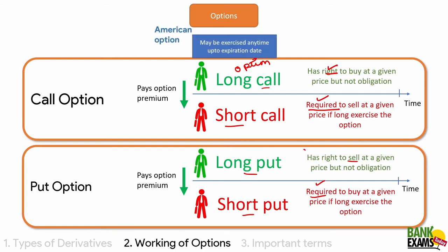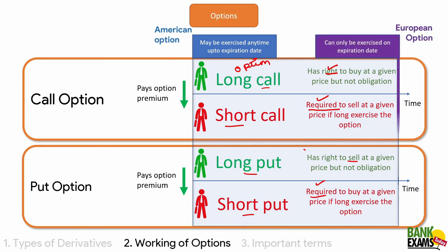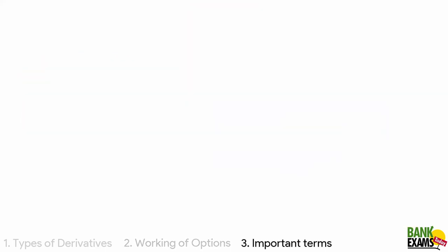What are American options and what are European options? Under American options, the option may be exercised at any point of time — the long can exercise his option at any point up till the expiration date. Under European options, the long can exercise his right only on the expiration date. An easy way to remember: 'A' for Anytime is American; 'E' for only on the Expiration date is European.